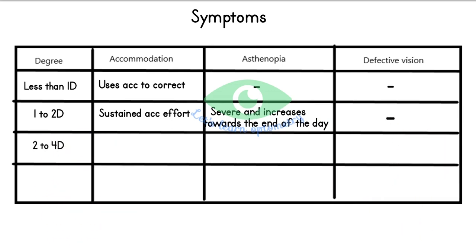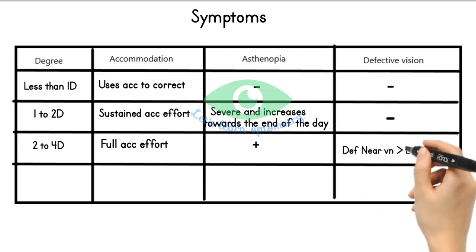Patients with 2 to 4 diopters will exert all accommodative ability to see distant objects, leaving nothing for near vision. They'll have both blurred vision and asthenopic symptoms, but blurred vision will be more for near than distance.